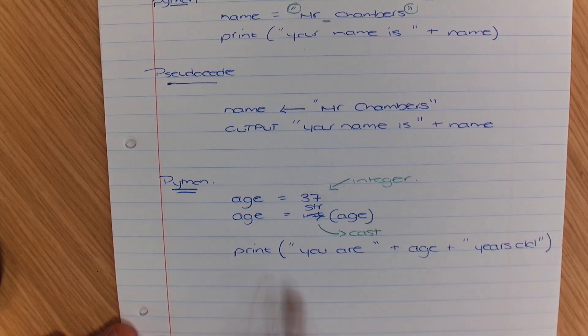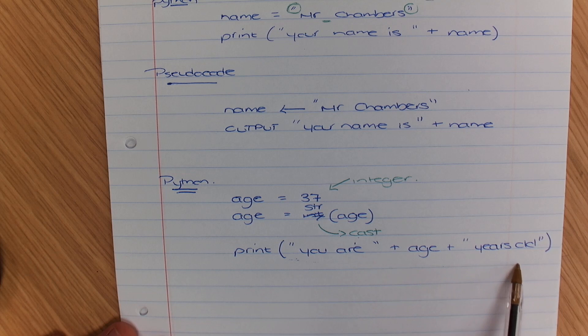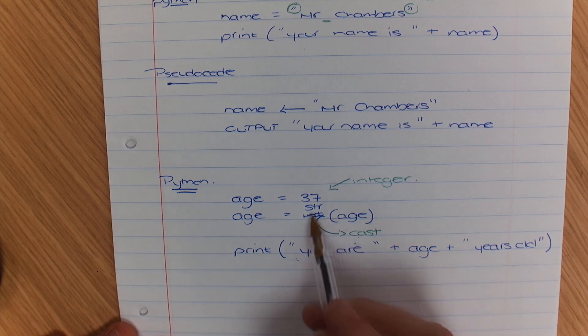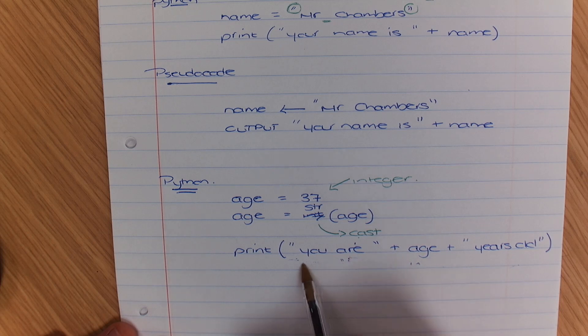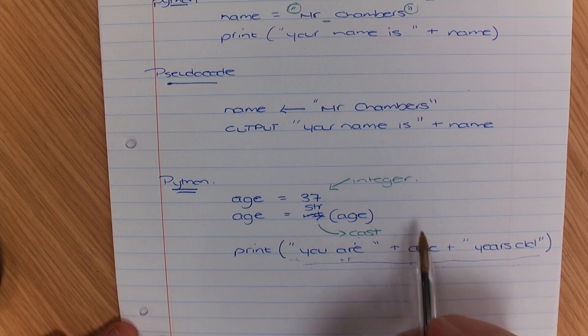Now that's a python example and the reason why we need to cast it and change the data type is that if you've got a string you cannot put a string and an integer together in the same output. So we have to cast it and convert it.